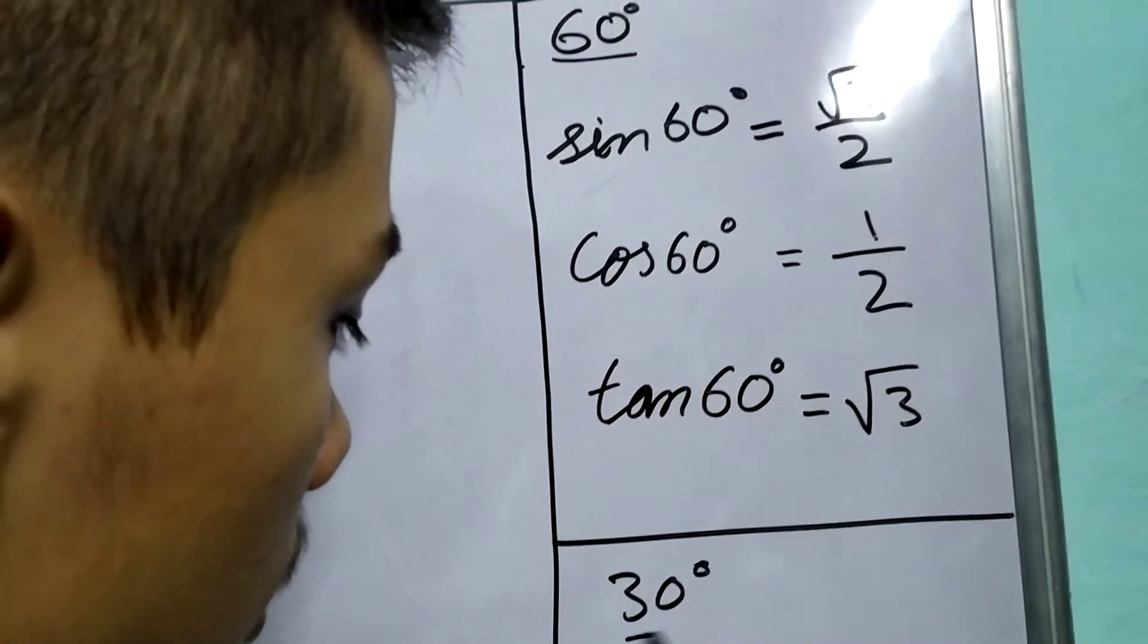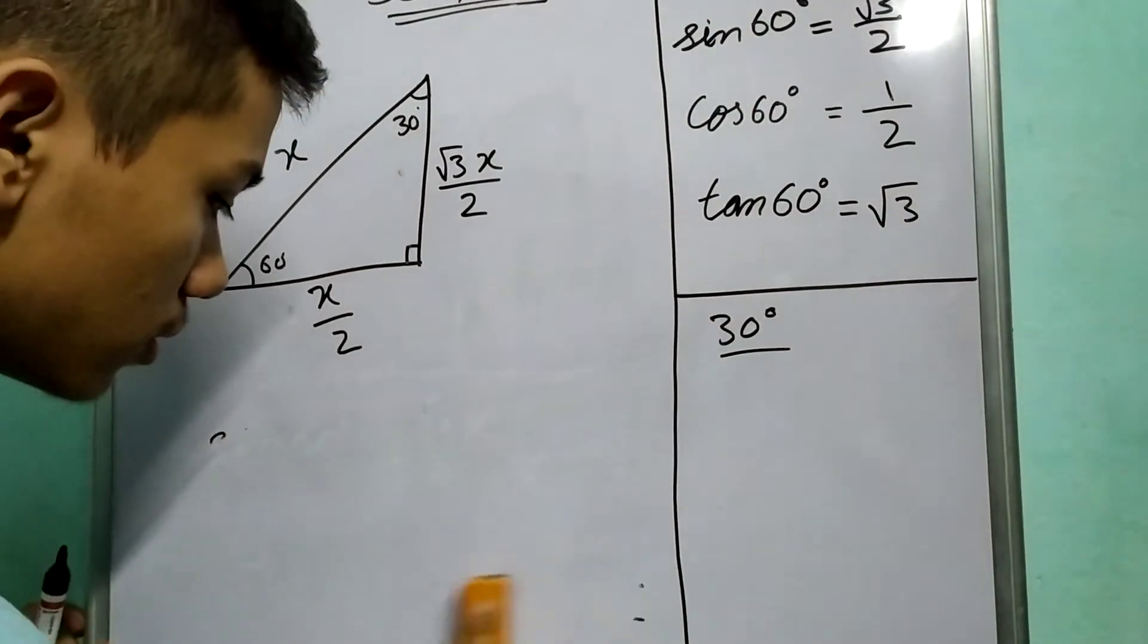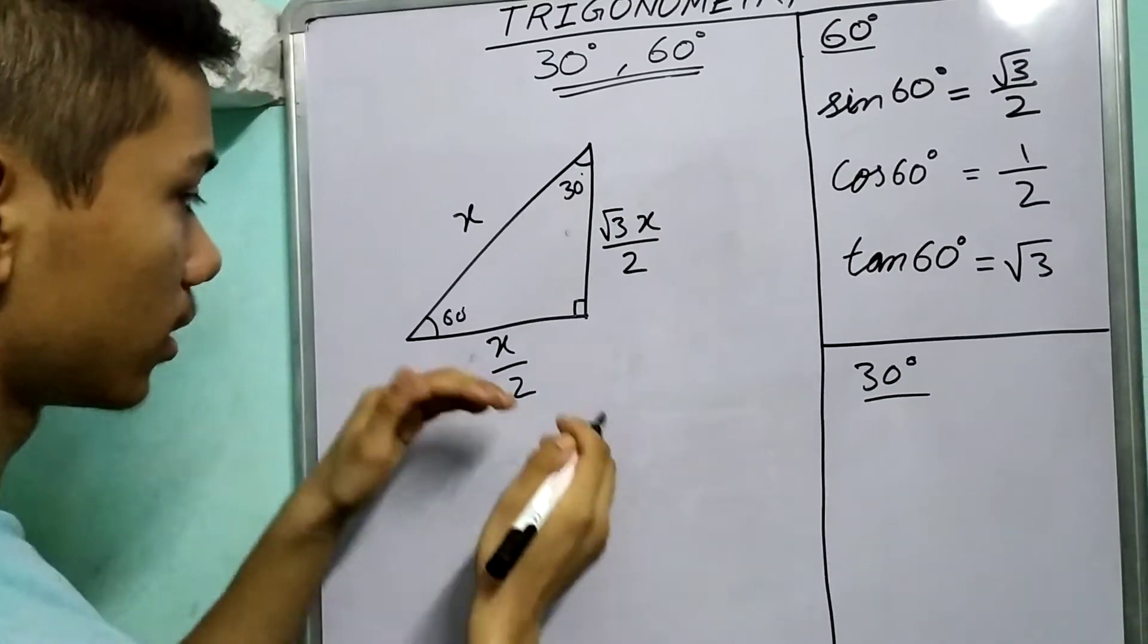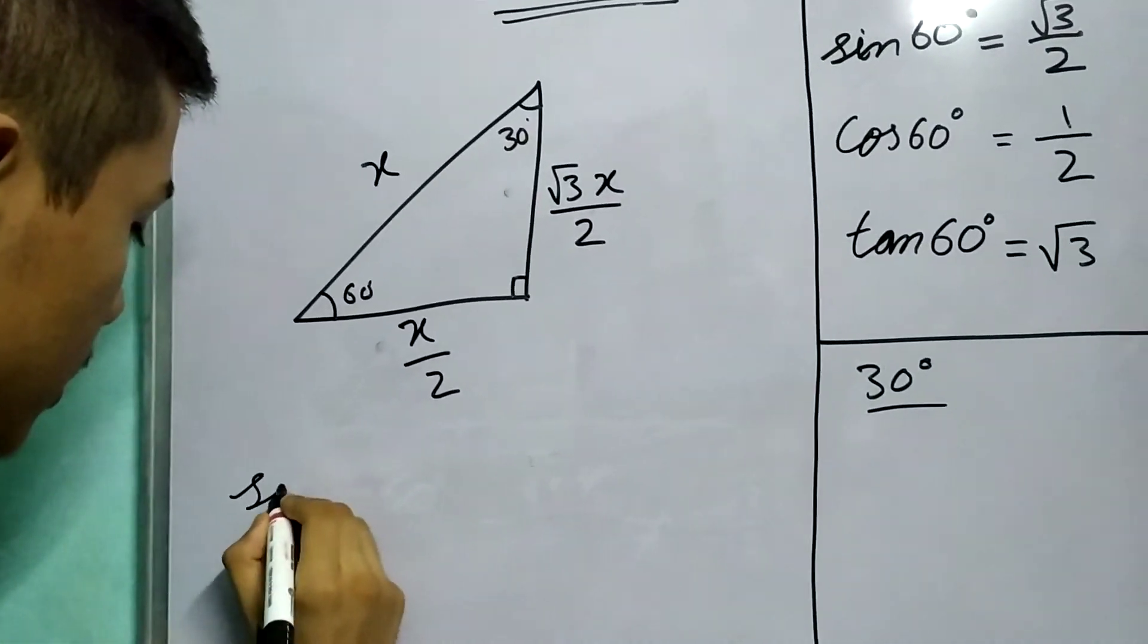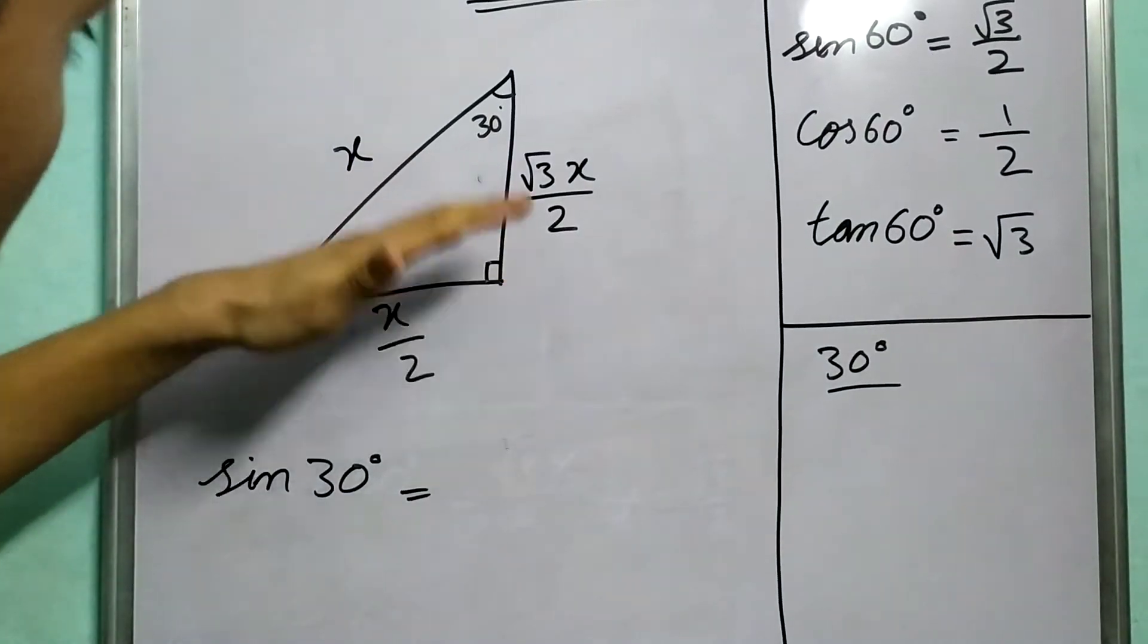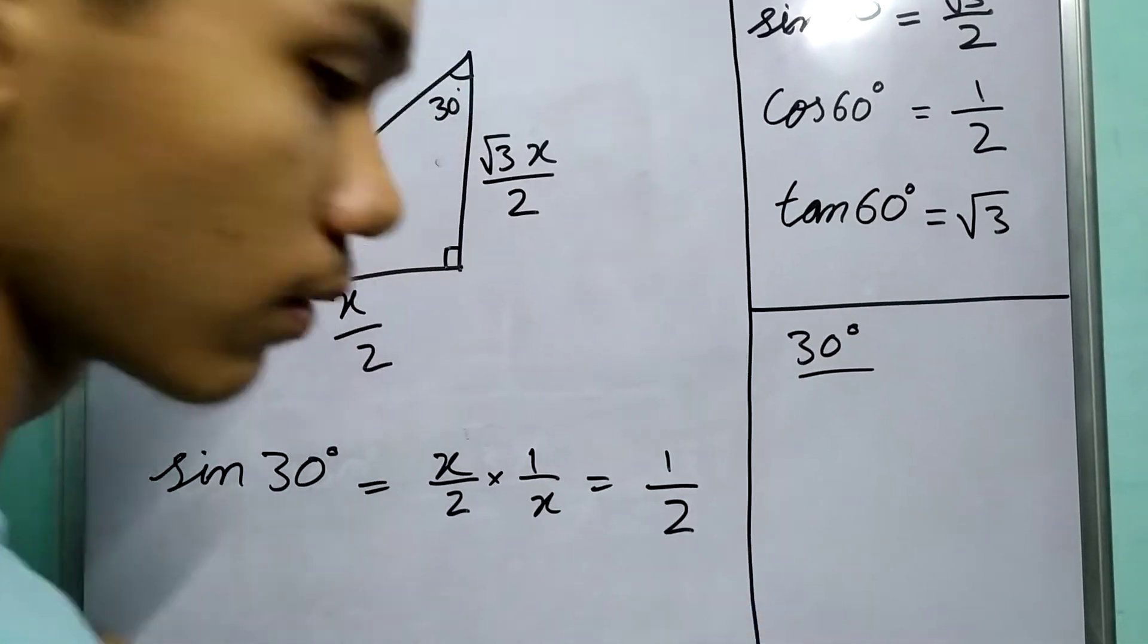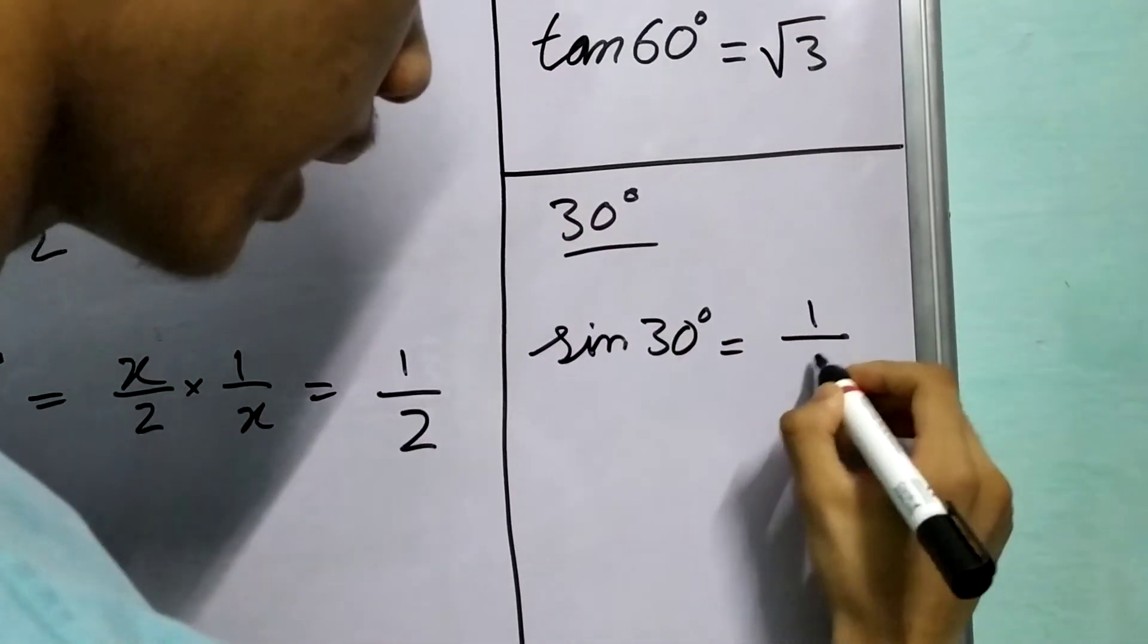Now for 30 degrees. Now again, 30 degrees is pretty easy. Now again, if we look from 30 degrees point of view, this side will be the perpendicular, this side will be the base, and of course hypotenuse will remain the same. So again, what will be sine of 30 degrees? Sine of 30 degrees will be perpendicular upon hypotenuse. So x by 2, this will be perpendicular for this case, upon x, 1 by 2. So sine 30 degree will be equal to 1 by 2.